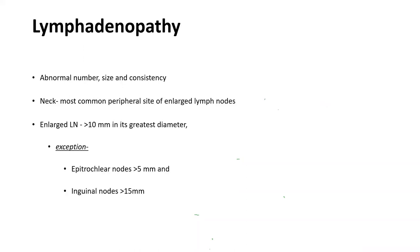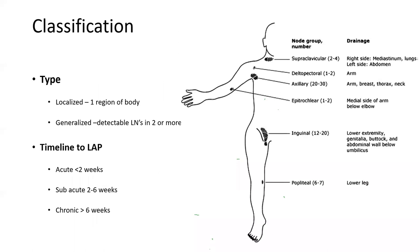Lymphadenopathy means any abnormal number, size, or difference in consistency of a lymph node. For peripheral lymphadenopathy, the neck is the most common site. Any lymph node more than one centimeter is considered enlarged, with two exceptions: epitrochlear nodes more than 5mm and inguinal nodes more than 15mm both require investigation. Classification is localized or generalized — generalized means two non-contiguous regions are involved. Timeline: acute is less than two weeks, sub-acute two to six weeks, and chronic more than six weeks.